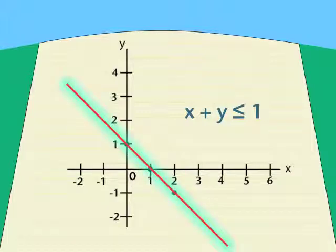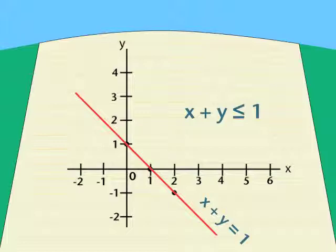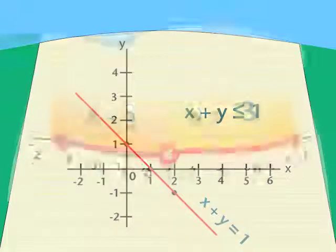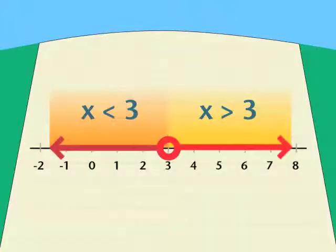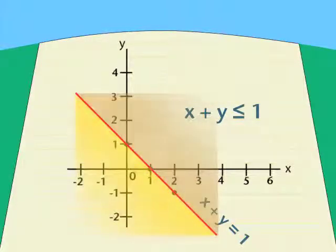First, we'll keep the graph we just plotted — we have the points that are equal. Our goal now is to plot the points that are less than. Notice how our graph, our equals line, divides the plane into two parts. Remember how our number line was divided into more than and less than? The same thing is happening here. But which side is greater than and which side is less than?